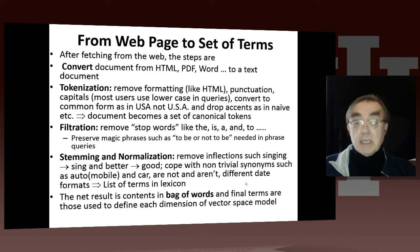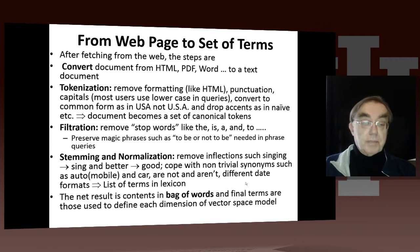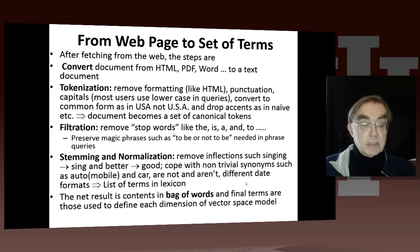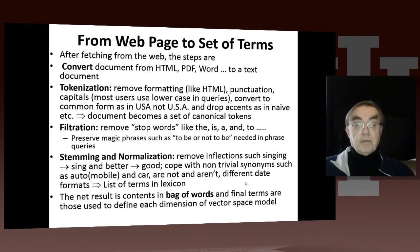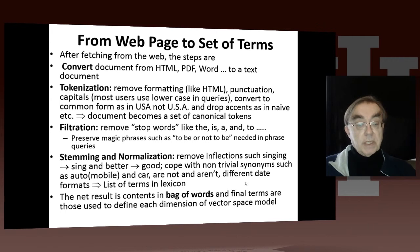Then we have stemming and normalization. We convert things like 'singing' and 'sung' to 'sing', 'better' and 'best' to 'good', and cope with non-trivial synonyms such as 'automobiles' and 'car', 'are not' and 'aren't', and different date formats. You then end up with terms for your lexicon. Those terms are the things in your bag of words — really a bag of terms — and they define each dimension of the vector space model.